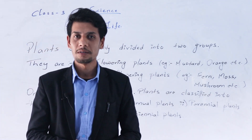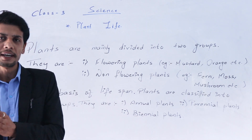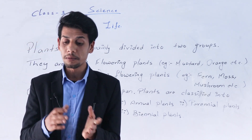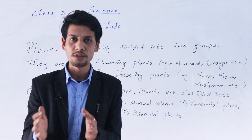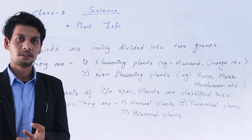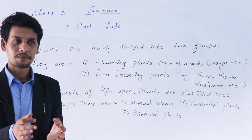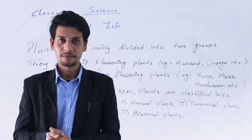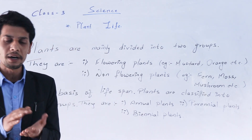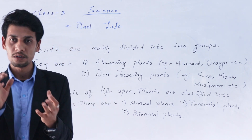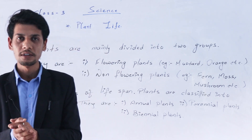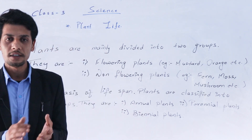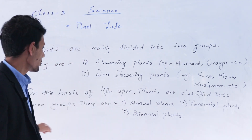Plants are also divided into two groups based on their lifespan. Some plants exist for a long time — they have a long lifespan. But some have a shorter lifespan. Based on lifespan, they are classified into three groups: annual plants, biennial plants, and perennial plants.